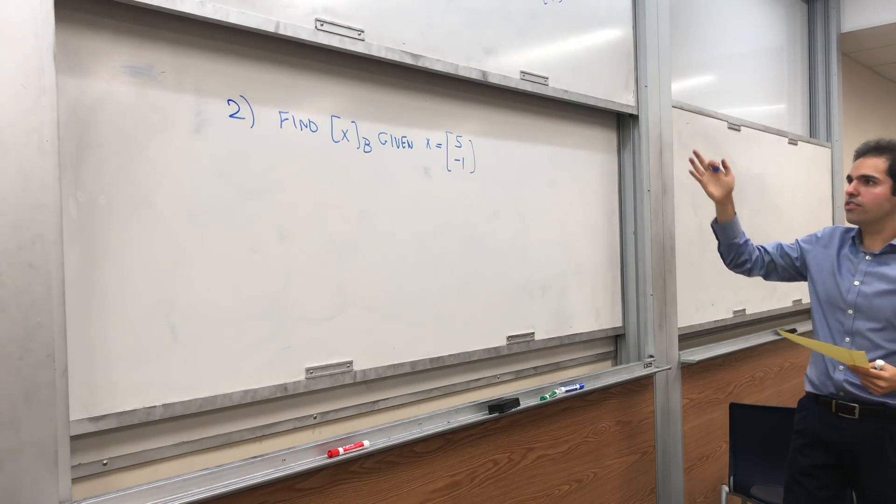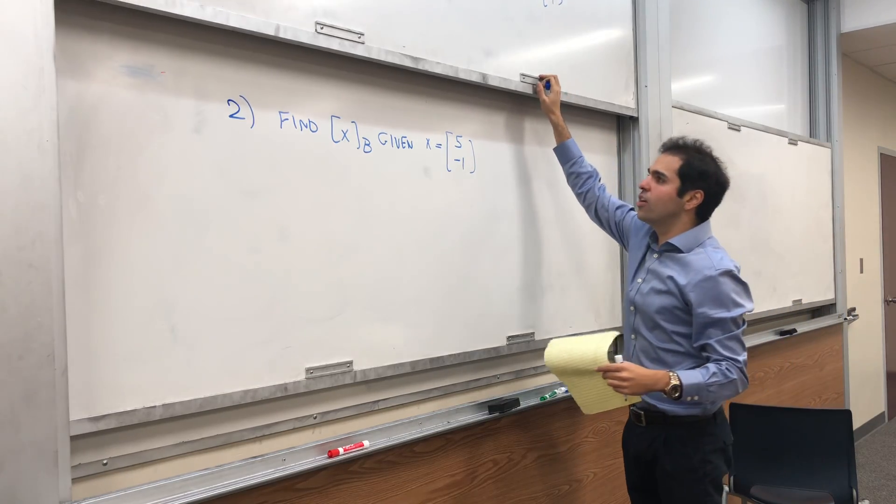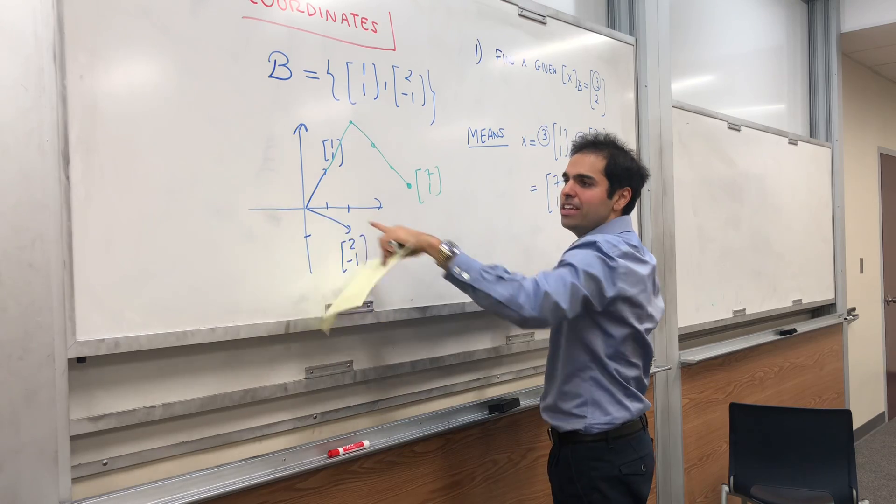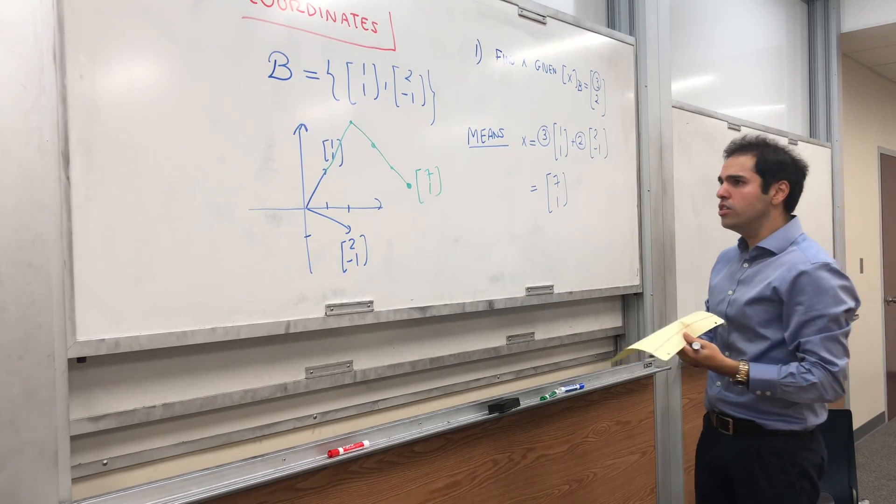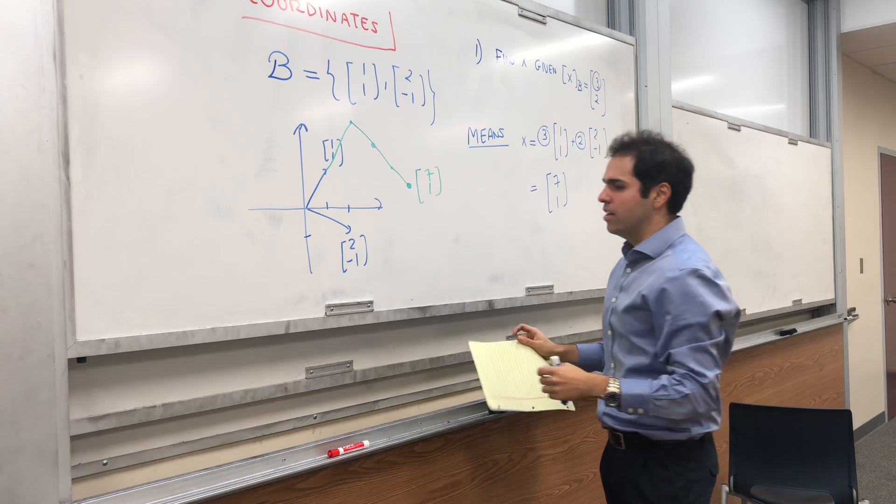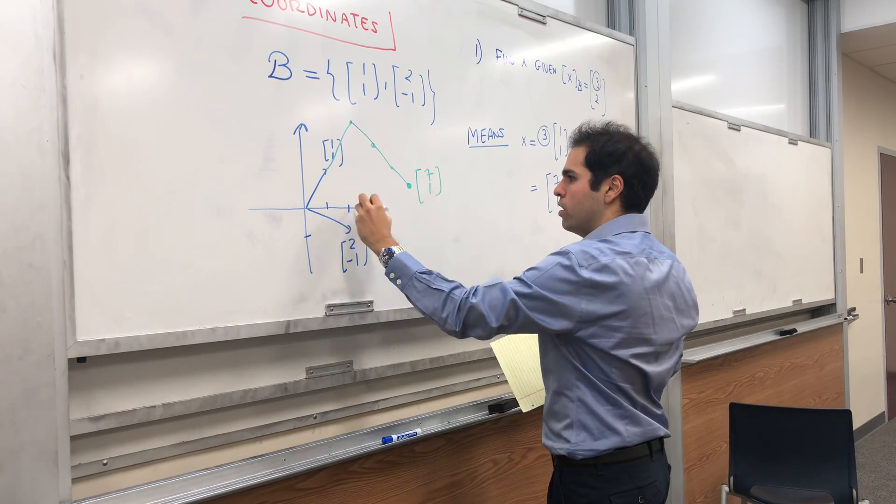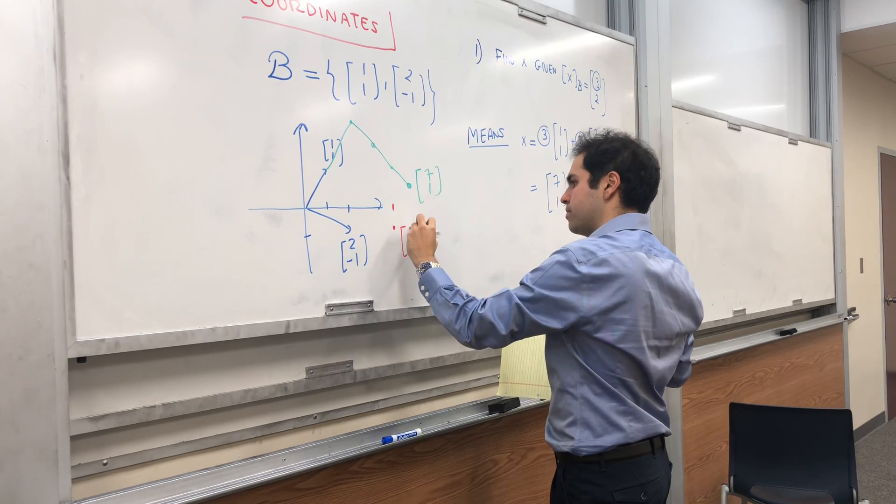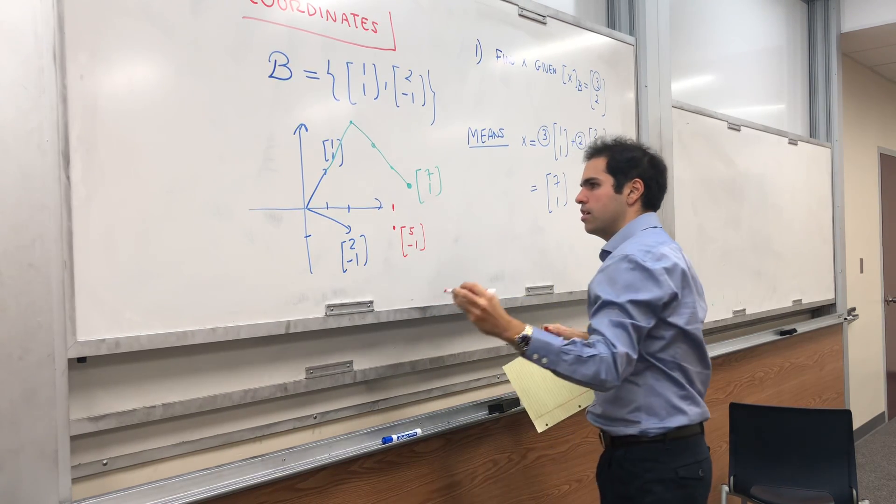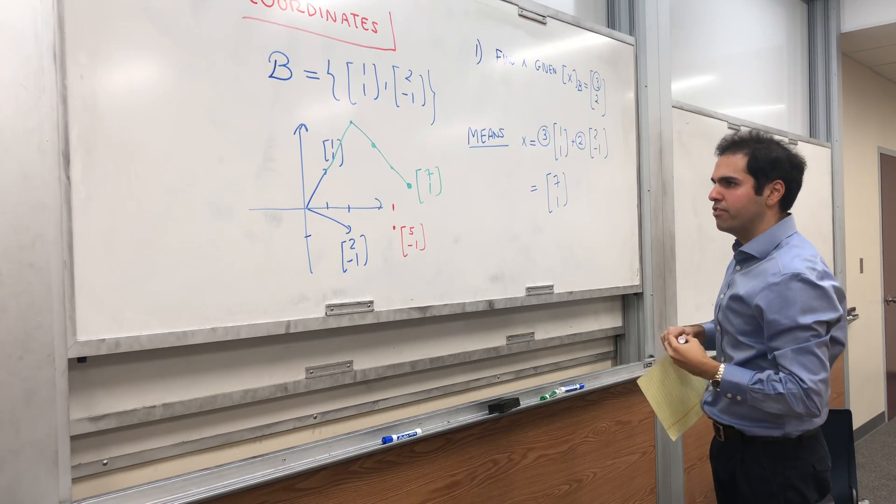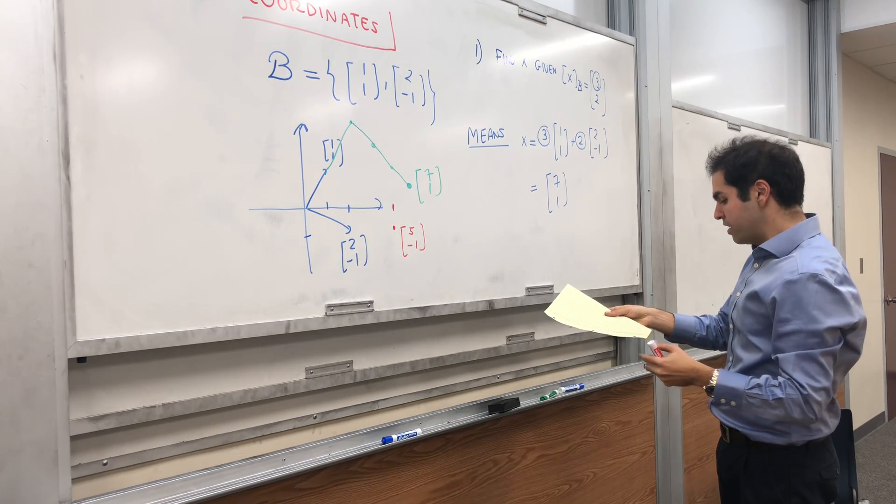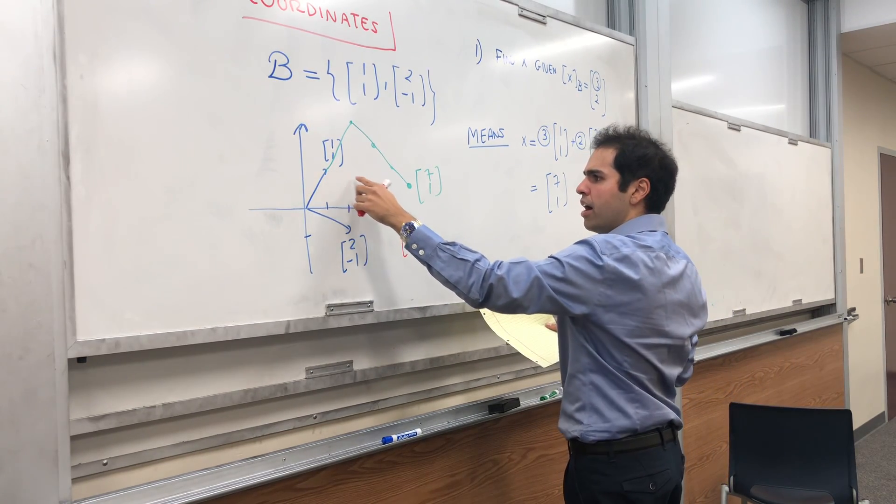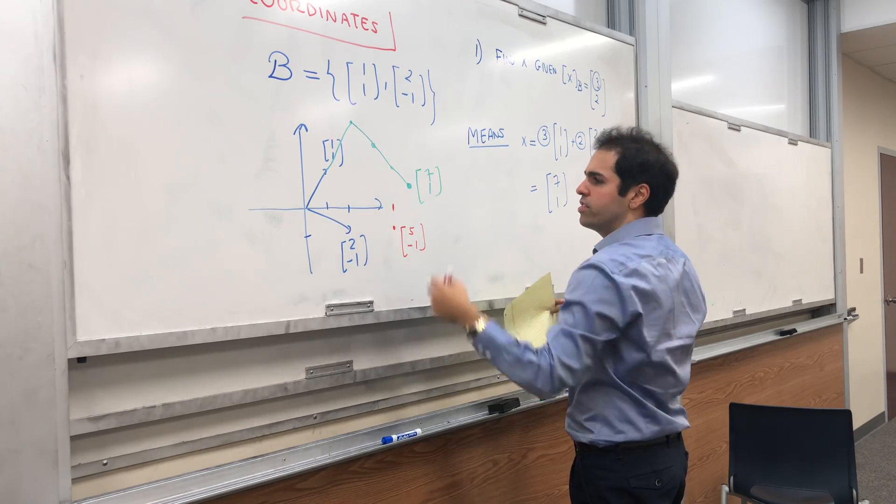So suppose you have this vector (5,-1), the question is, how many steps in this direction, and how many steps in this direction do you have to go to get (5,-1), which is roughly here? So 1, 2, 3, 4, 5, maybe here, and then minus 1 is here. And again, the question is, how many steps would you have to go? And maybe you can already see this, it almost looks like you have to go one step here and two steps here.